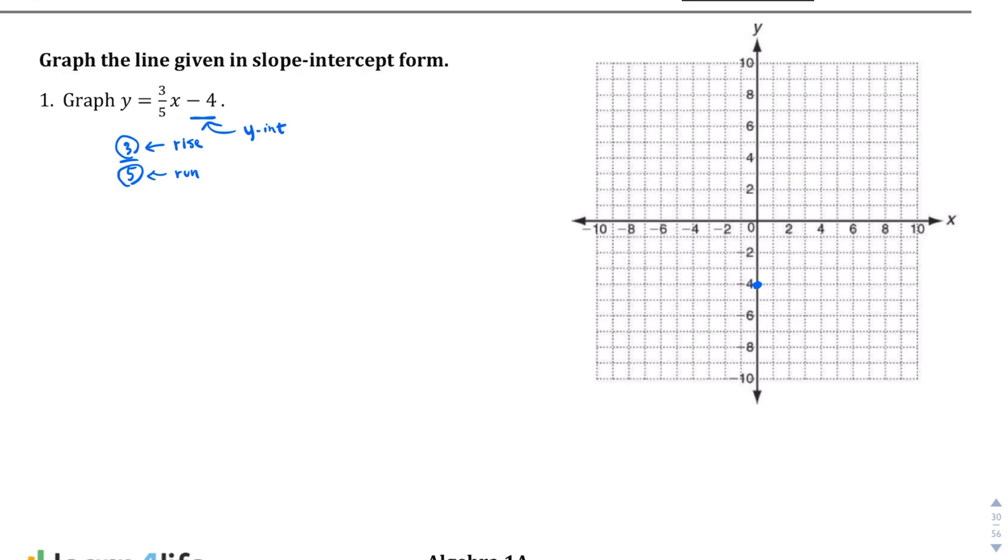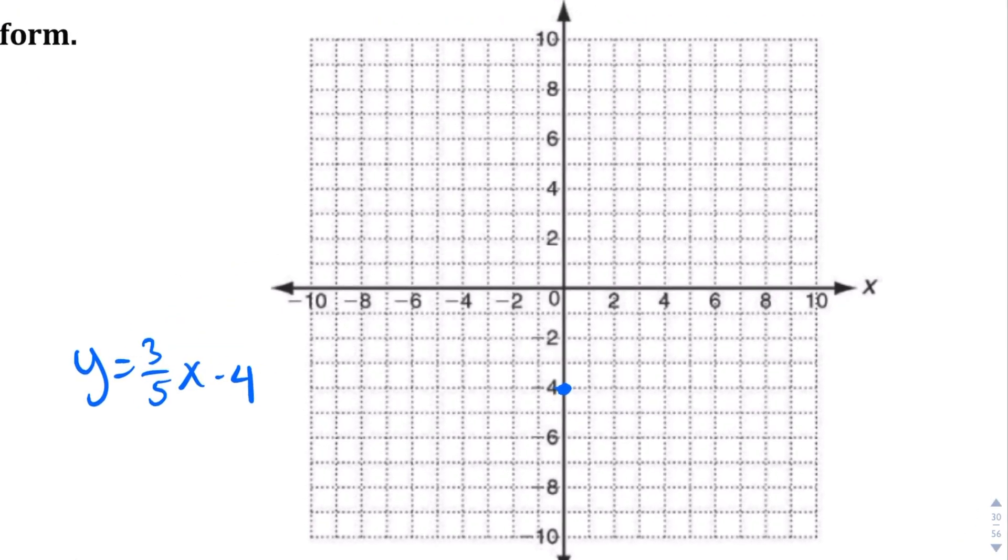Let me rewrite this real quick. y equals 3 over 5, x minus 4. It's the same equation. I'm going to zoom in, just so it's a little easier to see. Like I said, this is our starting point, negative 4. And then, this is our slope. The numerator tells us how many units we're going to go up. The denominator tells us how many units we're going to go to the right, from point to point.